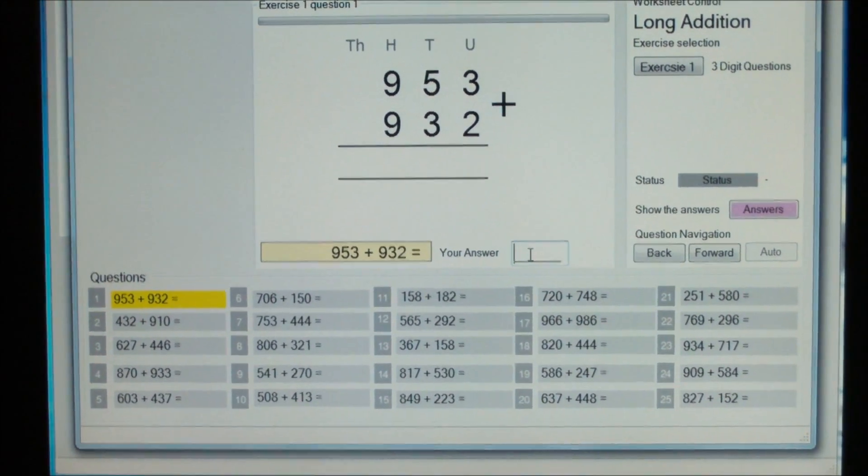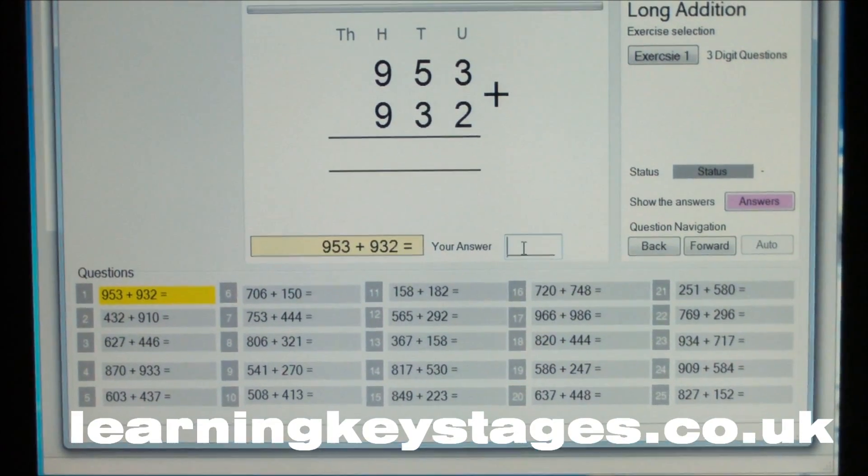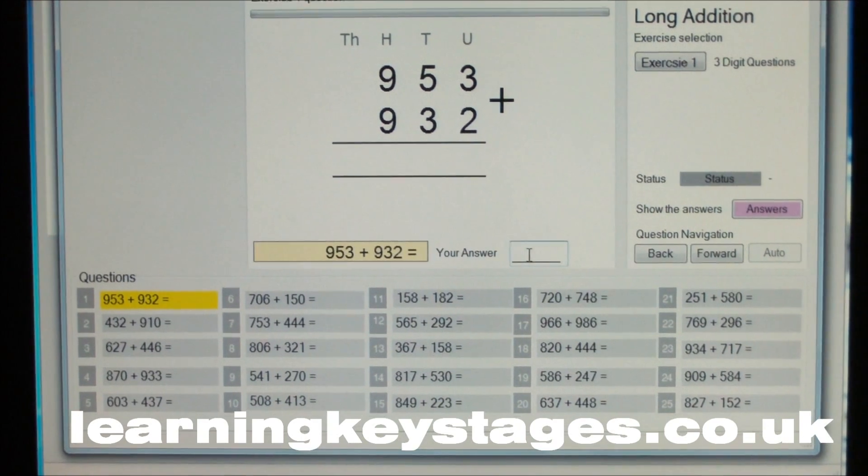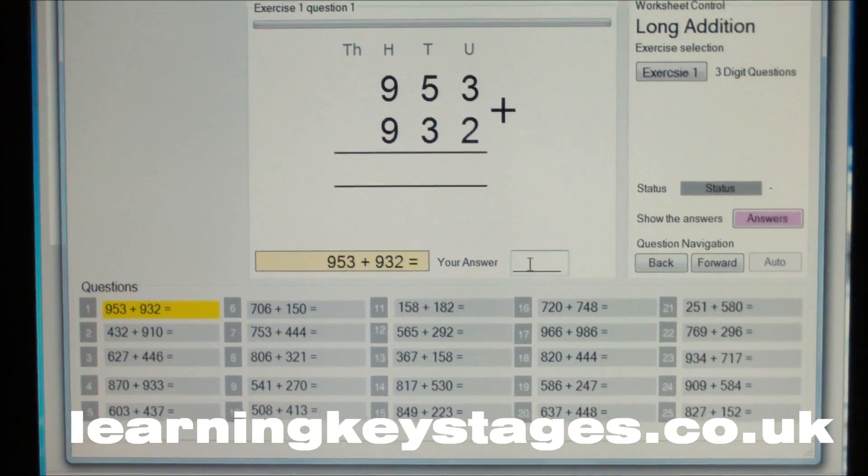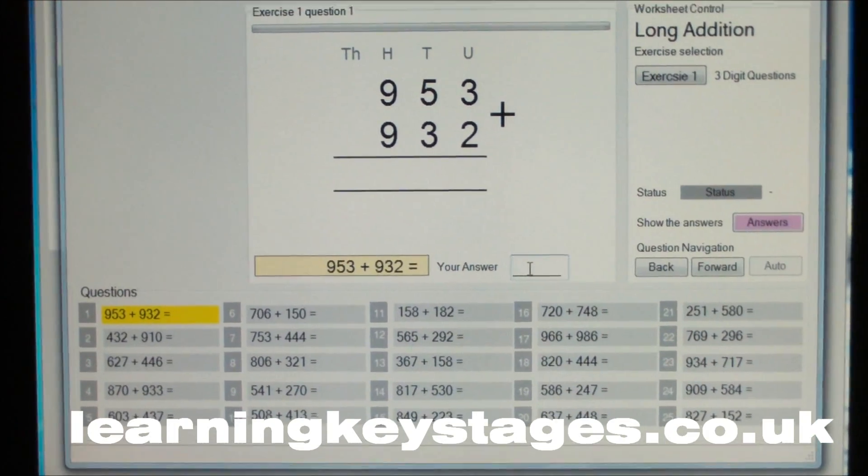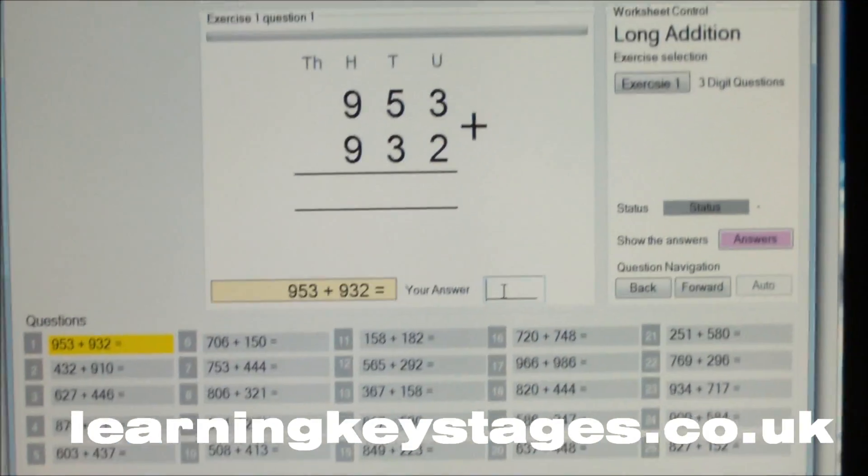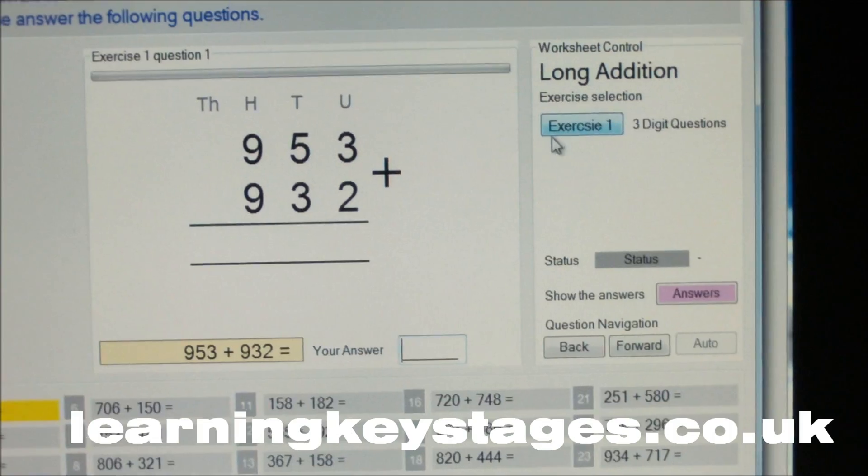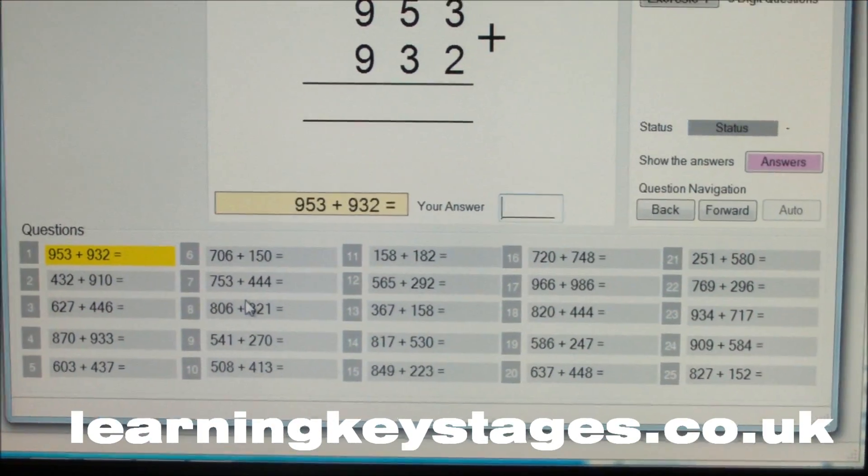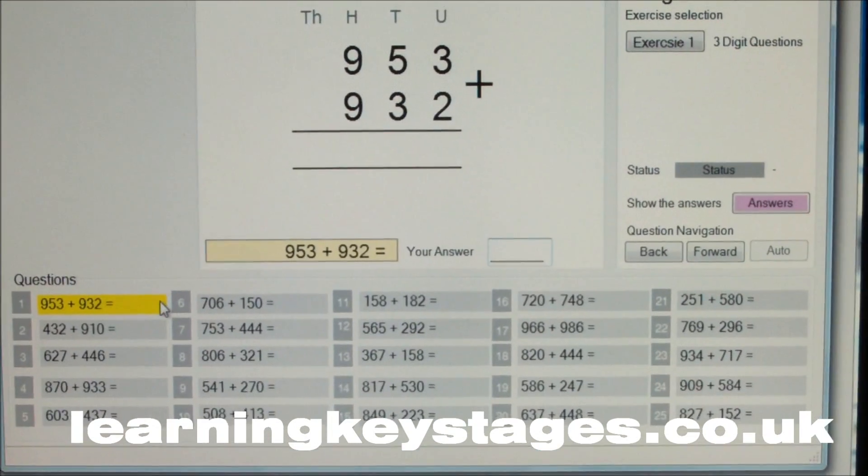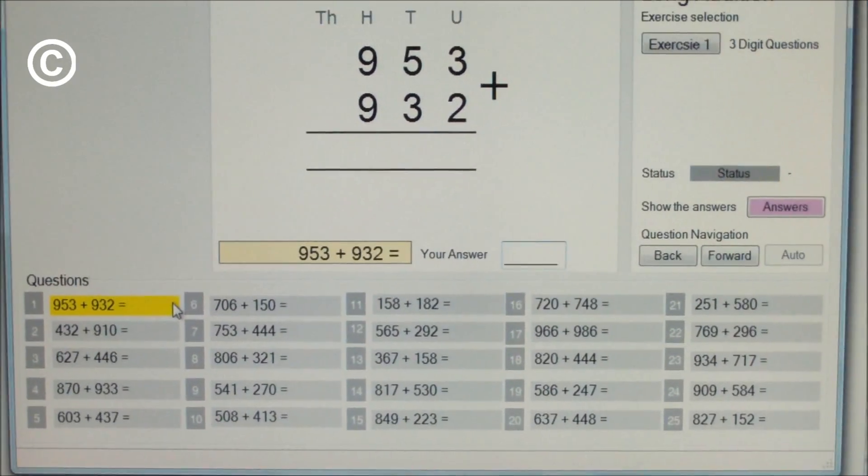Here we have the addition software to help you with the exercises that you can practice in your own time. You just download the software from learningkeystages.co.uk or other supporting websites and start off by selecting the exercise button here, which will generate 25 questions. Every time you select that button, it will generate a further 25 random questions.